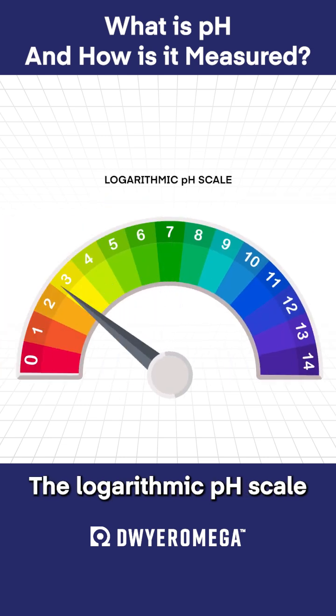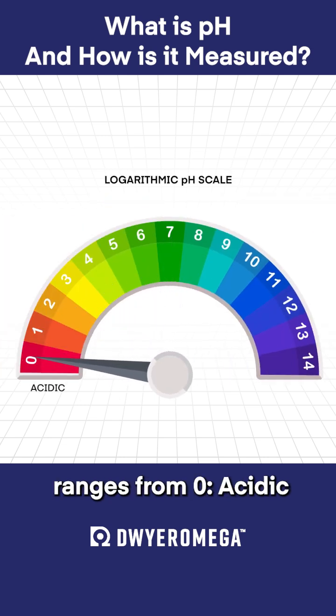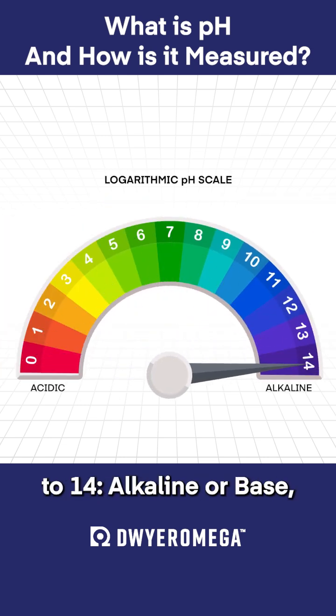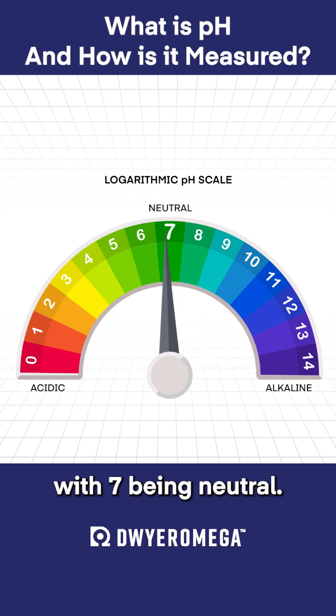The logarithmic pH scale ranges from 0, acidic, to 14, alkaline, or base, with 7 being neutral.